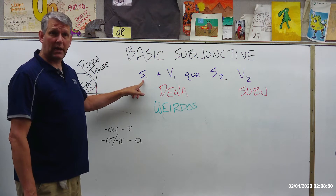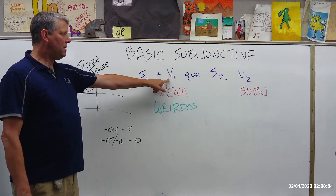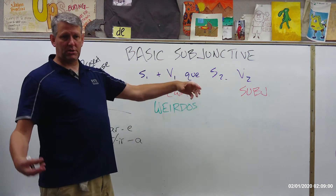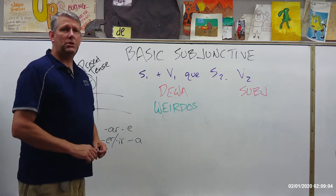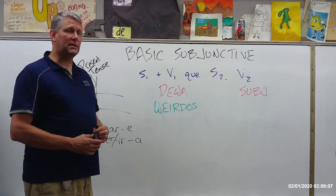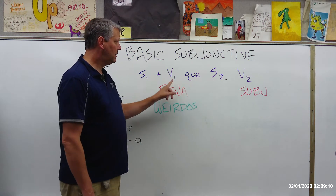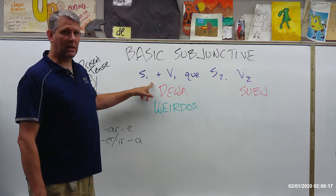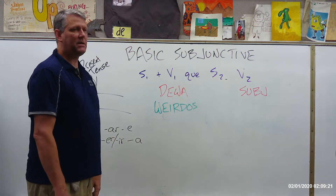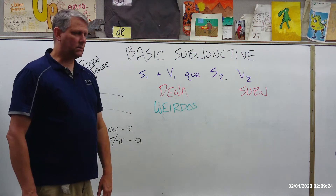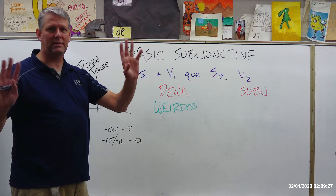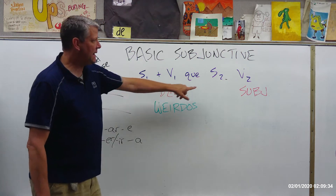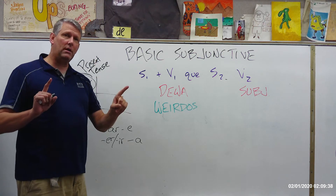The letter S stands for subject — a person, place, or thing, basically a noun. The letter V stands for verb. And then the little word 'que' is a conjunction that ties the two halves of the sentence together. In order to use the subjunctive, we need to have what we call a compound sentence — a sentence that has two subjects and two verbs, two clauses. This is the main or independent clause, and the second half is called the dependent or subordinate clause.